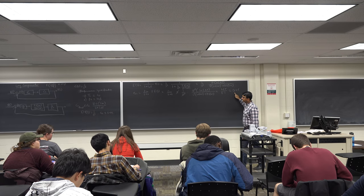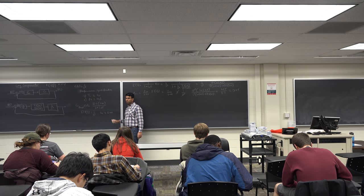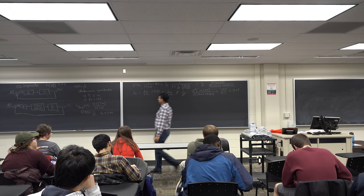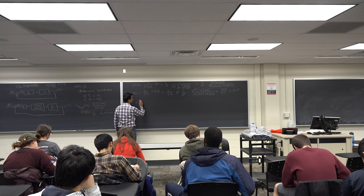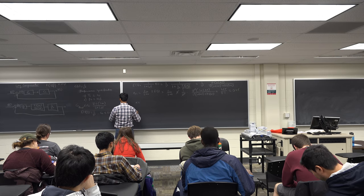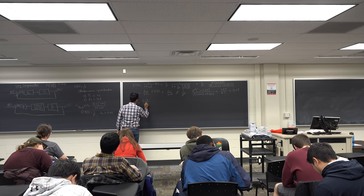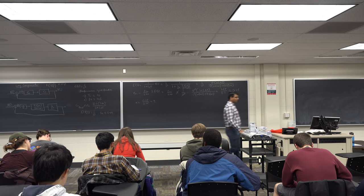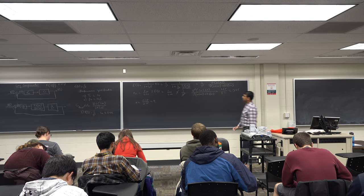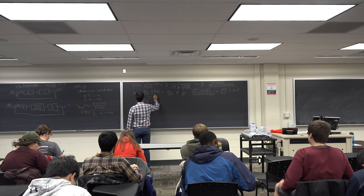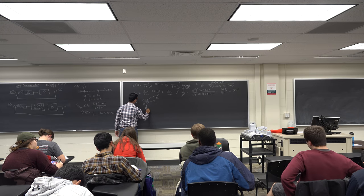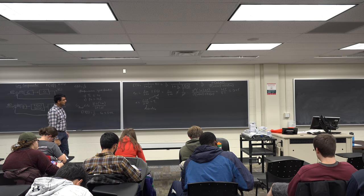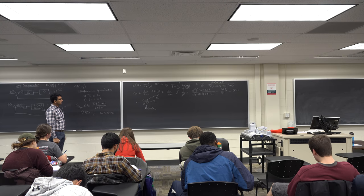The steady state error is 0.45, which is very high, and I need to get it down to 0.05. Let's define alpha as the actual E_SS over the desired E_SS, which is 0.45/0.05 = 9. This tells us by what factor we need to increase the error constant, and that factor is 9.